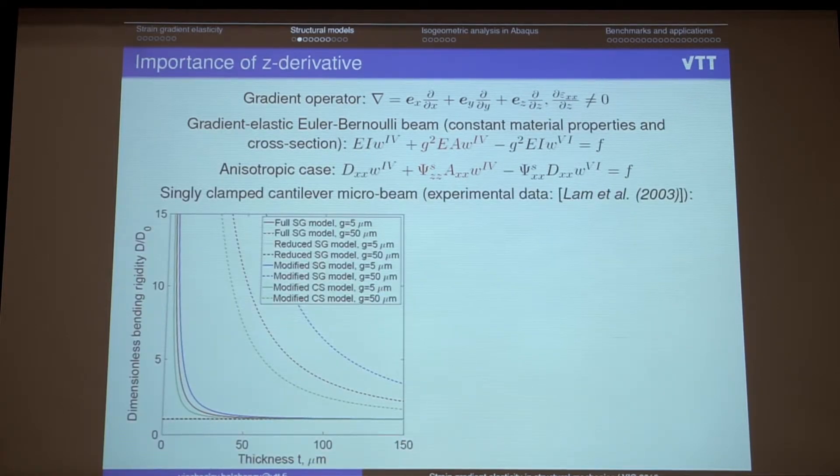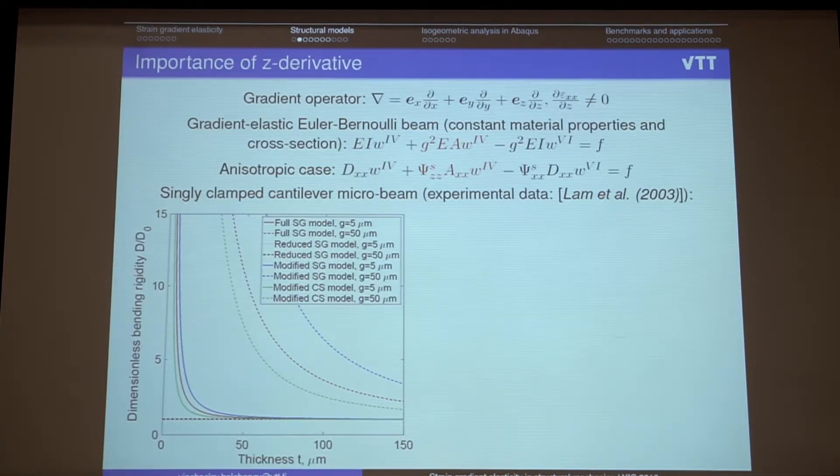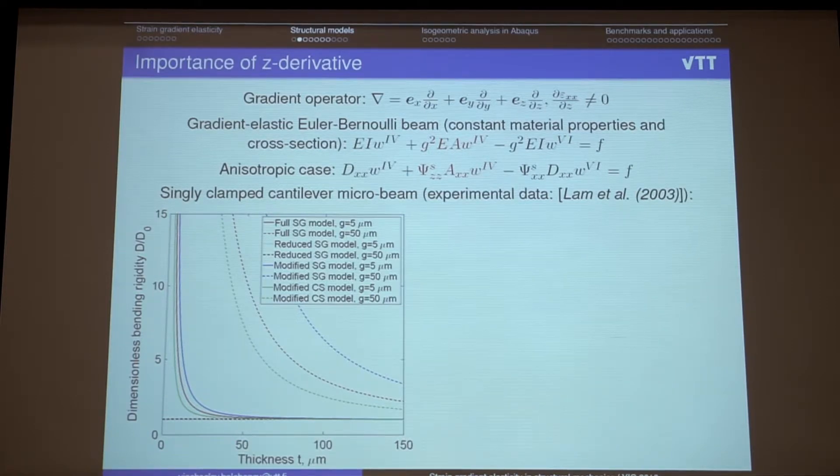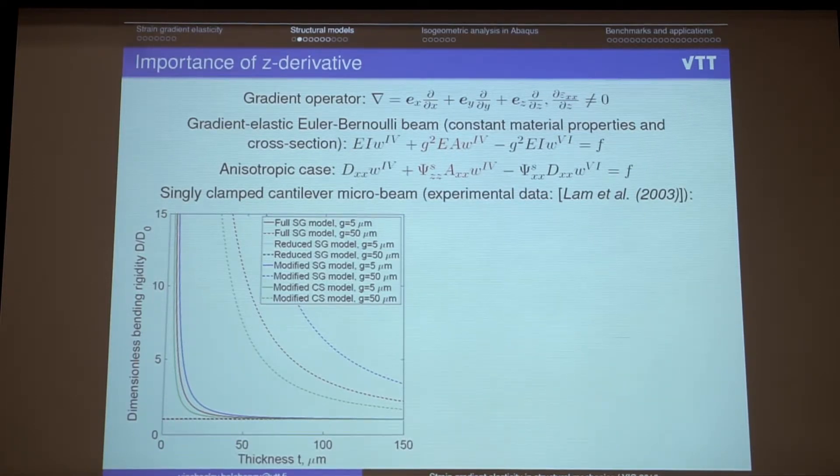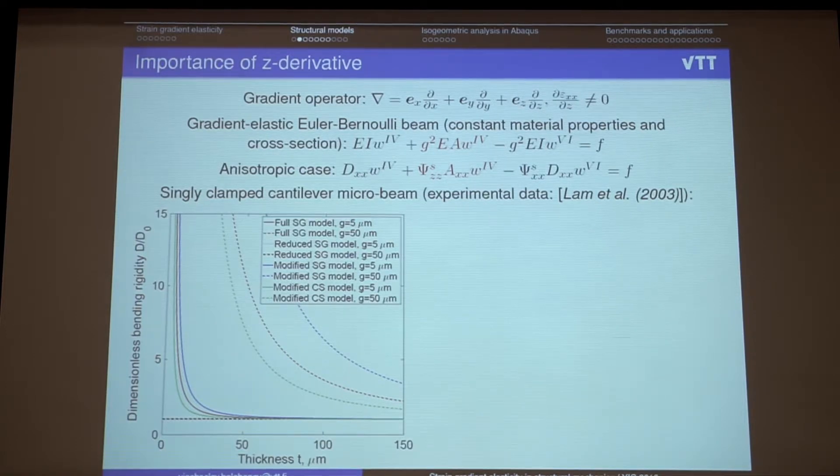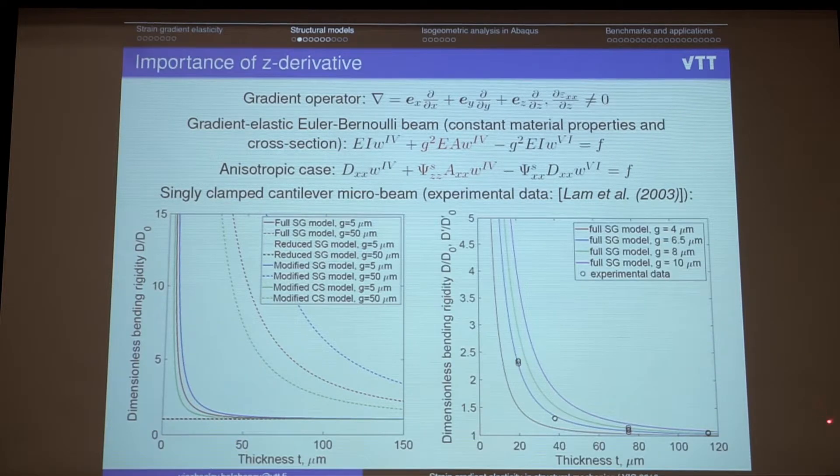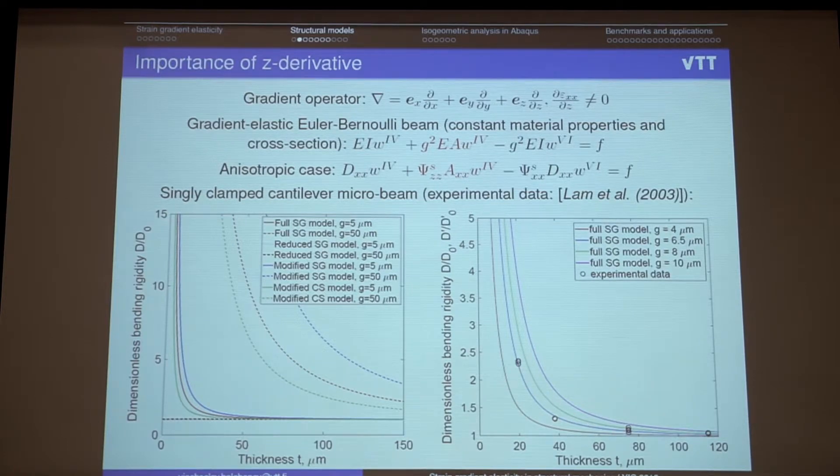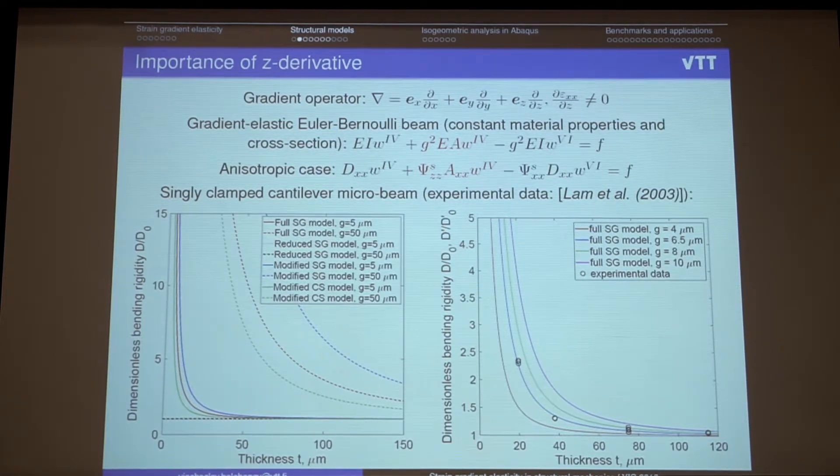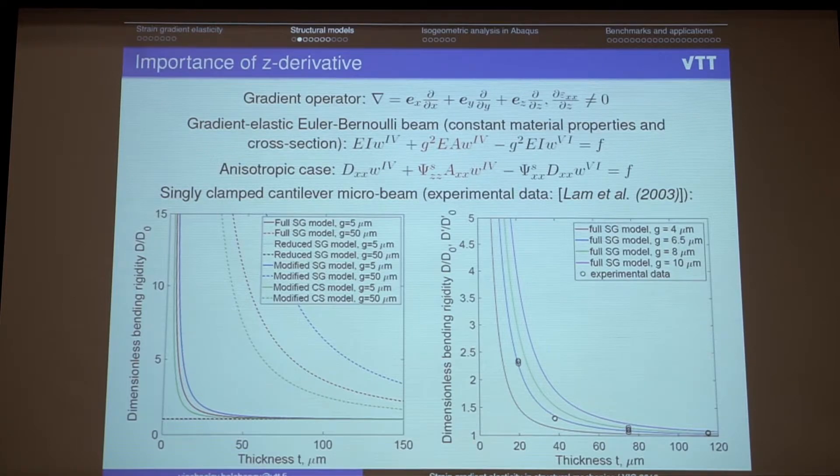And why they are important? So we want to capture so-called size effect. Which means that when the thickness of the beam tends to some intrinsic length of the material, the dimensionless bending rigidity increases dramatically. But if we don't take into account this term, we definitely have, we cannot capture this kind of effect. And this effect also can be observed in experiments. And it shows that the strain gradient elasticity captures such kind of size effect very, very good.